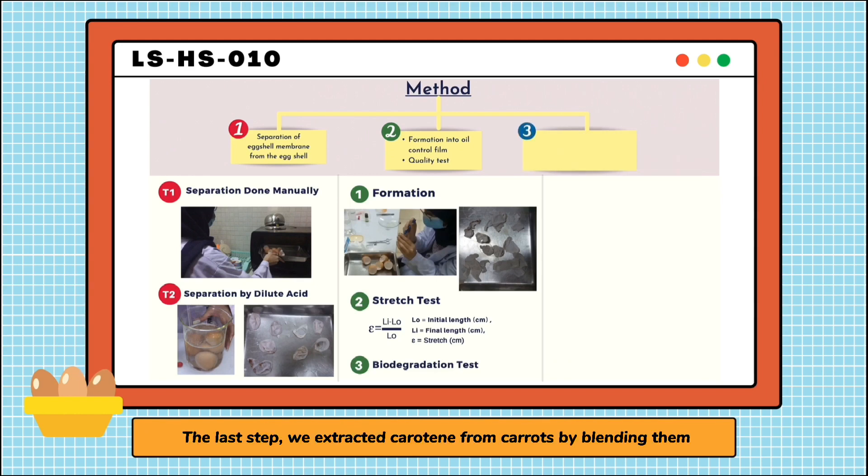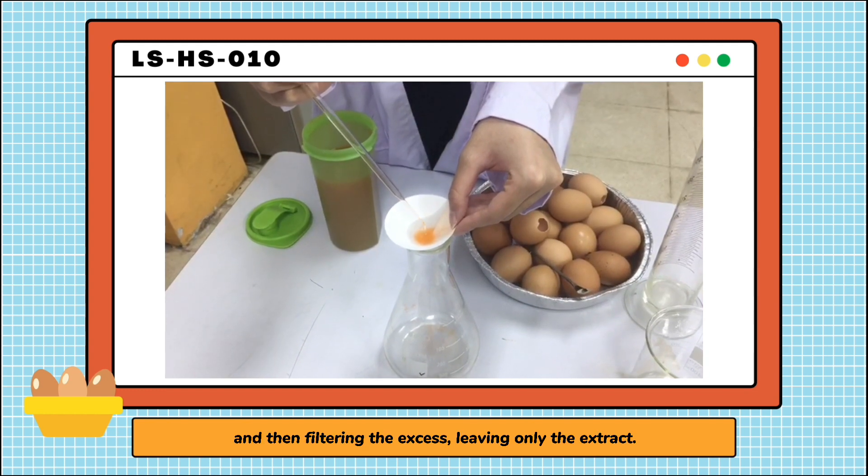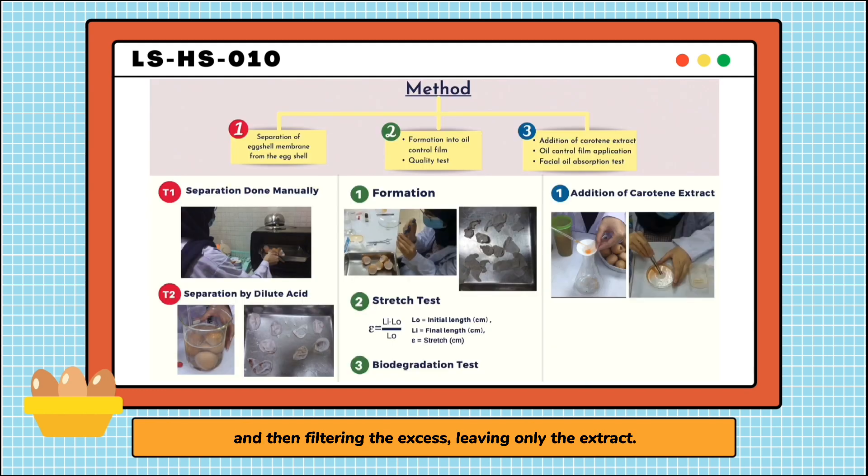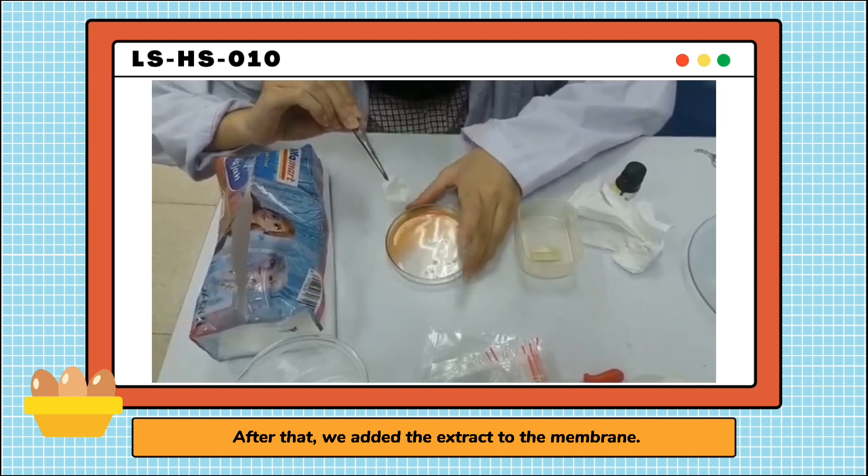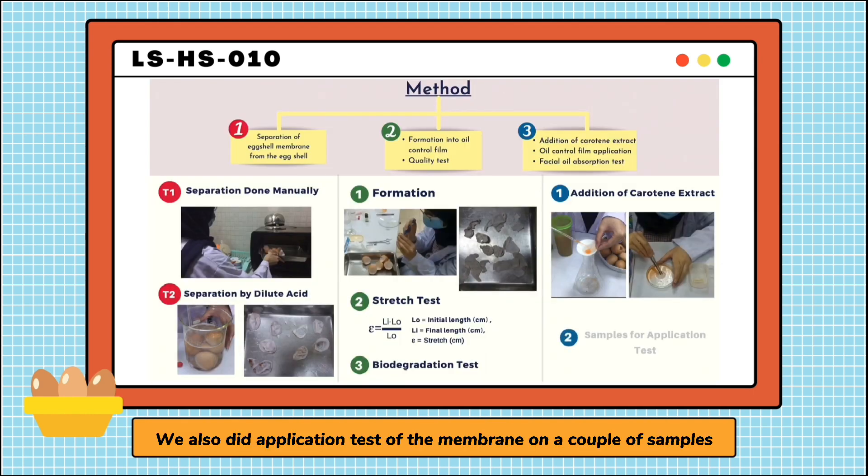The last step, we extracted carotene from carrots by blending them and then filtering the excess, leaving only the extract. After that, we added the extract to the membrane. We also did application tests of the membrane on a couple of samples with the criteria of not having egg or carrot allergy.